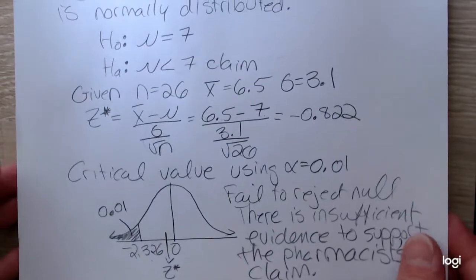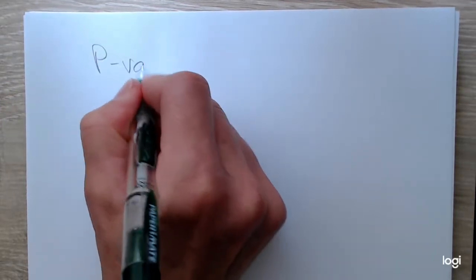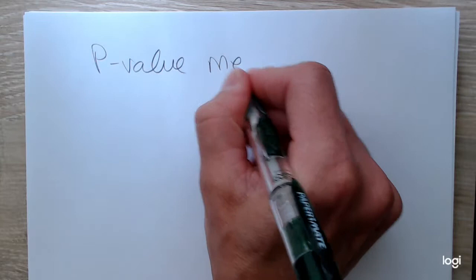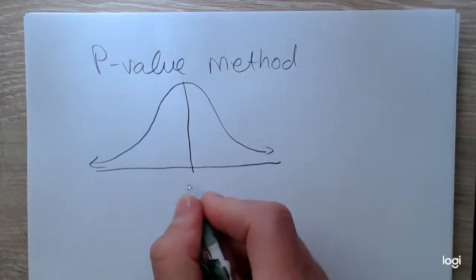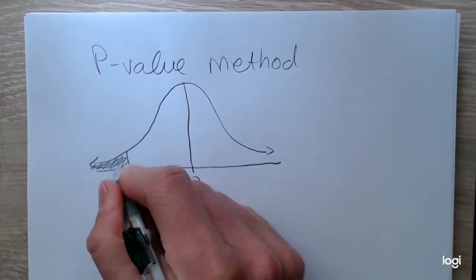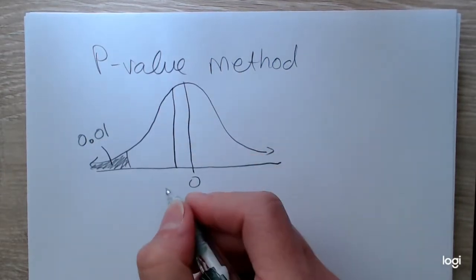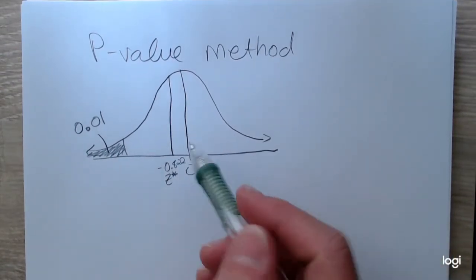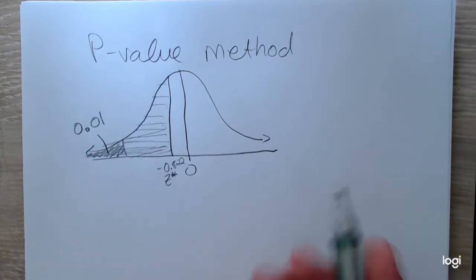The p-value method will give you the same thing. The p-value is the probability of getting a test statistic at least as extreme as the one obtained from the sample. So I'm going to sketch the bell curve again and put my standardized test statistic there. Okay, so I have my standard normal curve. I have my area of rejection. And that's 0.01. And I have my standardized test statistic. That was negative 0.822. Okay, so this is Z-star, my test statistic. And since we have a lower tail test, the shaded area completely to the left of that is going to be the p-value.